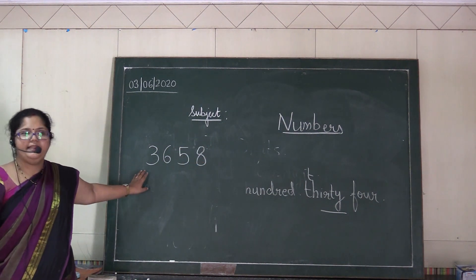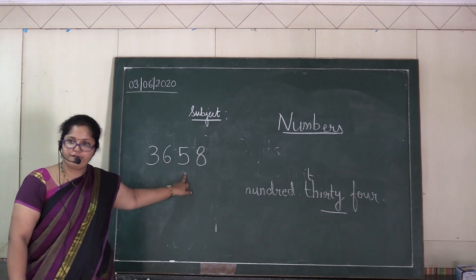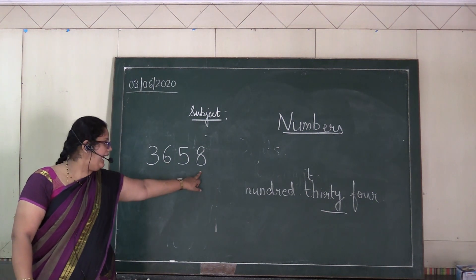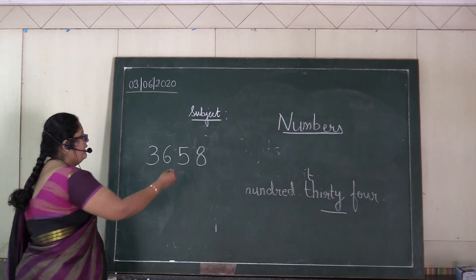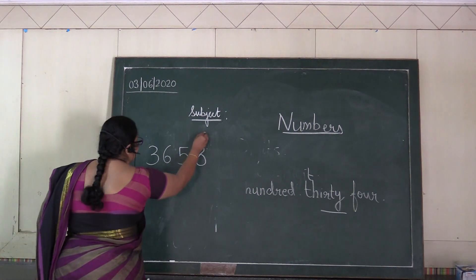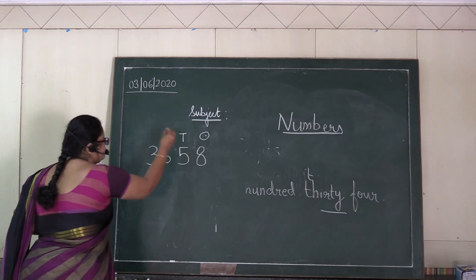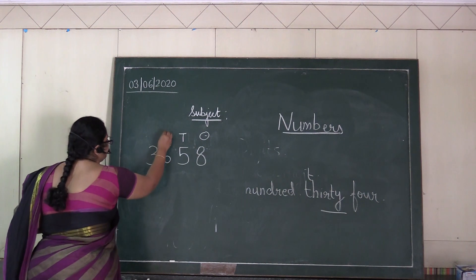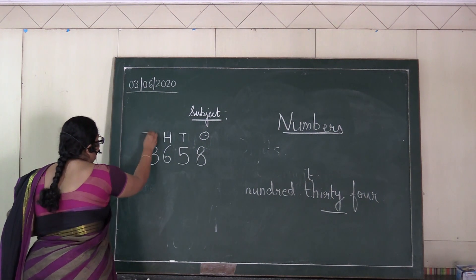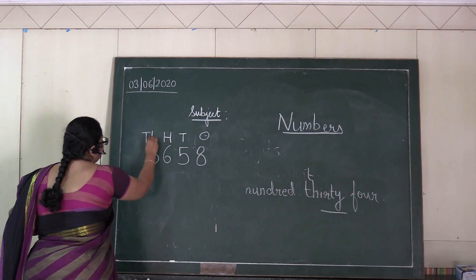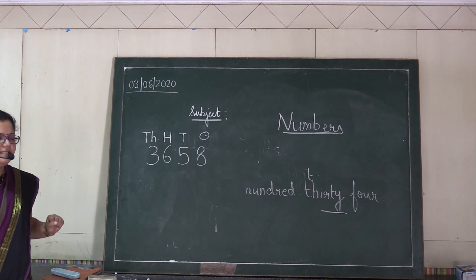Let's take another number: three thousand six hundred fifty-eight. Tell me the places. Eight is in one's place. Five is in ten's place. Six is in hundreds place. And three is in thousandths place.